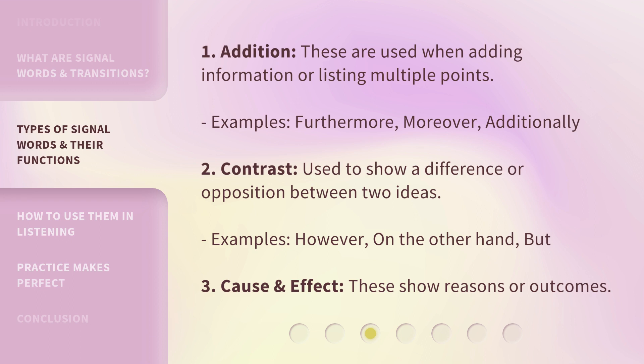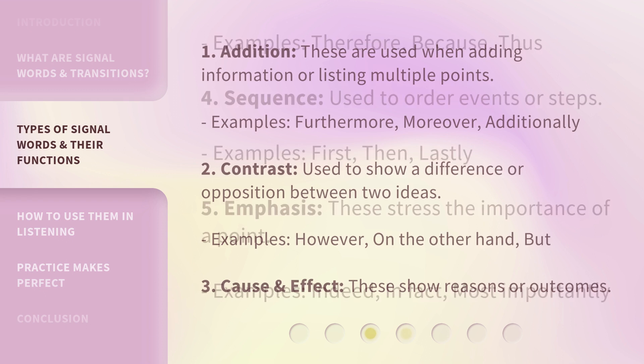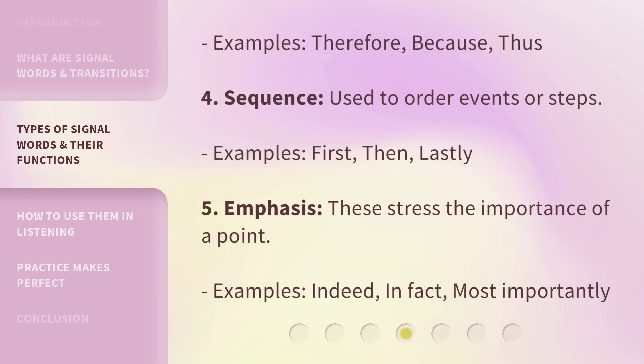3. Cause and effect. These show reasons or outcomes. Examples: therefore, because, thus. 4. Sequence. Used to order events or steps. Examples: first, then, lastly. 5. Emphasis. These stress the importance of a point. Examples: indeed, in fact, most importantly.